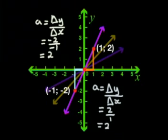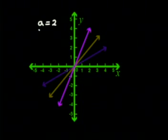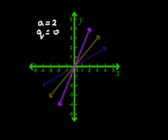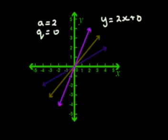Moving further on the y-axis has made the graph steeper. You have to travel twice as far up or down to get to the next point on the graph. That's what makes the graph steeper than the parent graph. The a value is 2 and the q value is 0, so y equals 2x plus 0 — in other words, y equals 2x.